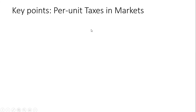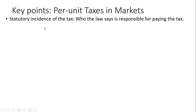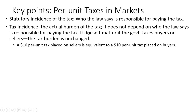Here are the key points. We're in particular talking about a per unit tax. The statutory incidence of the tax is who the law says is responsible for paying the tax. The tax incidence is the actual burden of the tax, and it does not depend on who the law says is responsible for paying the tax. It doesn't matter if the government taxes buyers or sellers — the tax burden is unchanged.